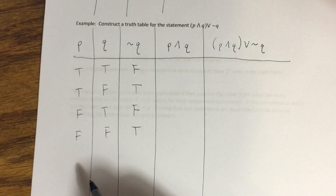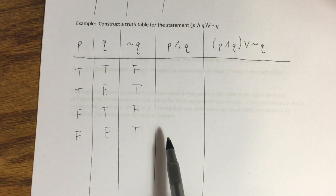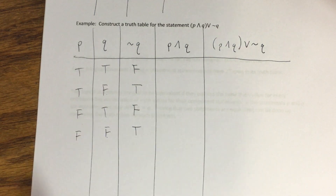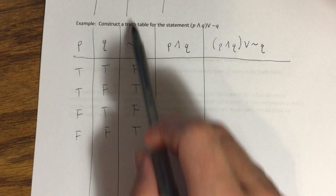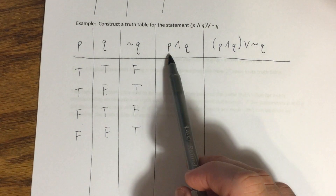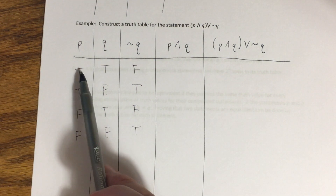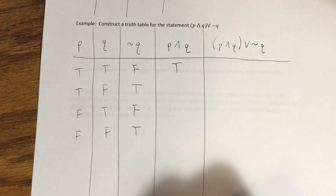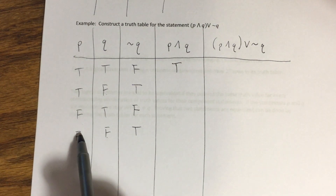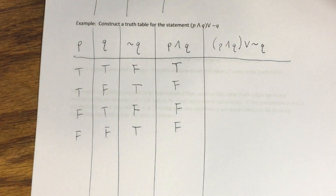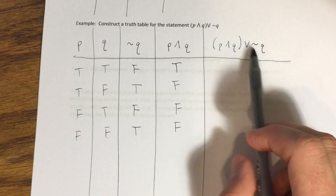Next, the 'p and q' column: p and q correspond to the first two columns. Since it's a conjunction, it can only be true if both component statements are true, which only happens in the first row. In the other three rows, at least one statement is false, making the conjunction false.